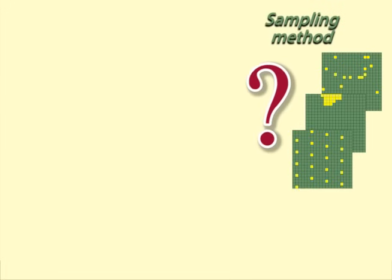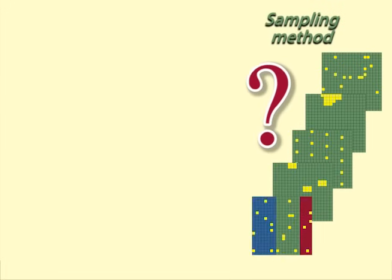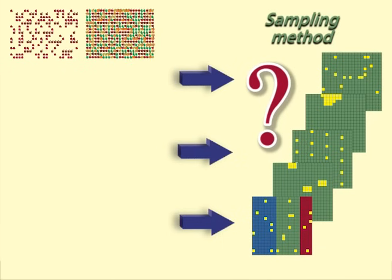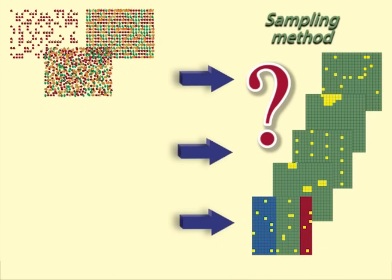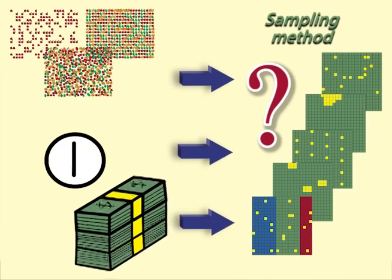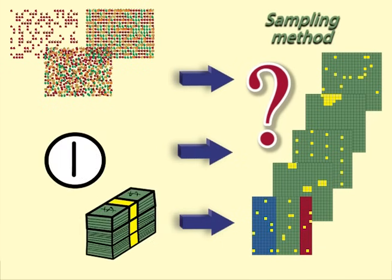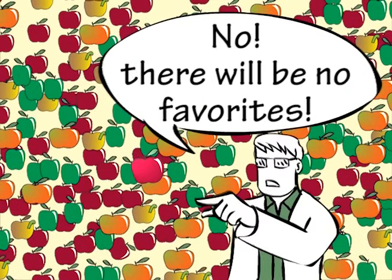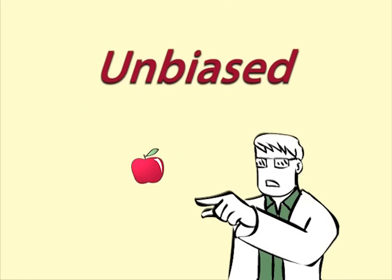The method chosen for taking the sample depends on the nature of the population and the resources available in terms of time and money. The ideal is for each object in the population to be equally likely to be chosen as part of the sample. This is called an unbiased sample.